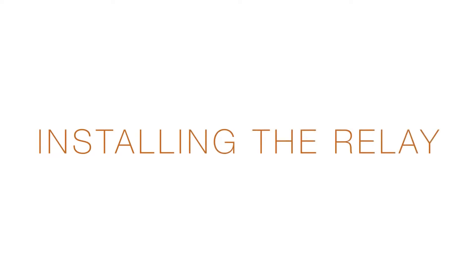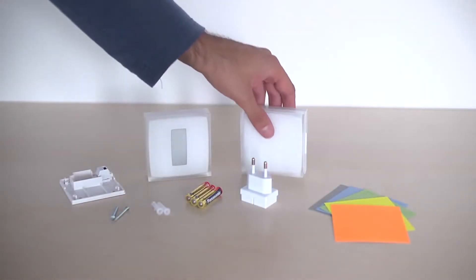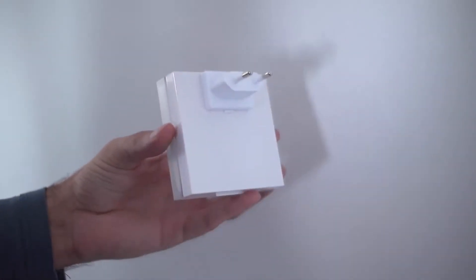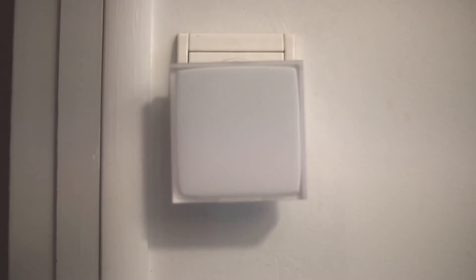Installing the Natatmo relay. Take the relay and the mains adapter. Connect them. Plug in the relay. The light on the relay will blink to indicate it is working.